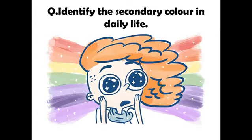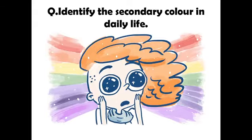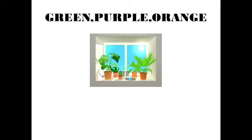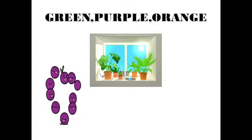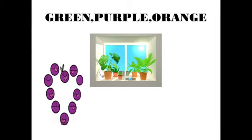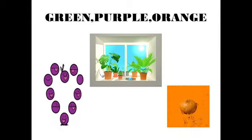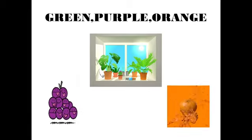Now the question is: identify the secondary colors in daily life. In daily life, you can identify secondary colors — there are so many things around you that are orange, purple, or green. For example: plants are green, grapes are purple, and an orange is orange in color. So you can see secondary colors in your daily life. Thank you students, have a nice day, bye!